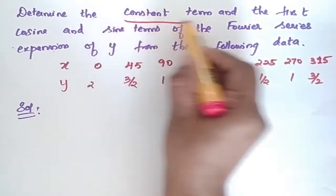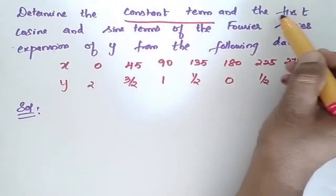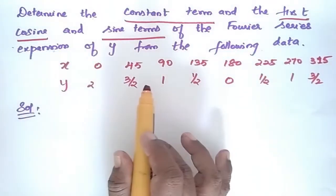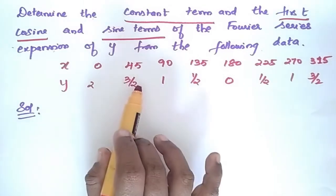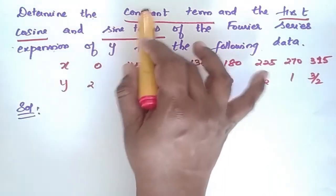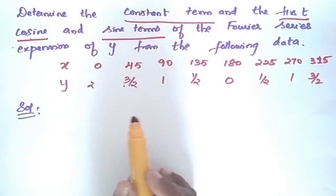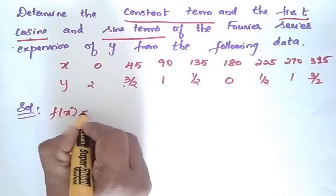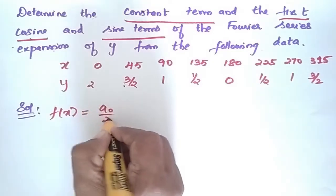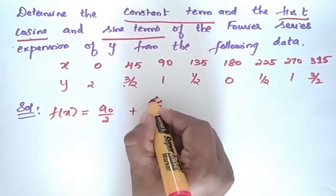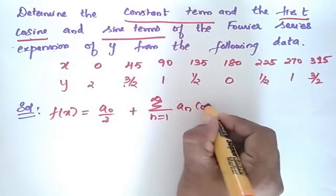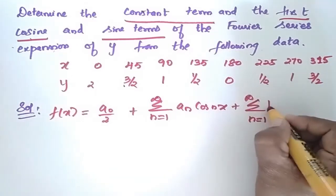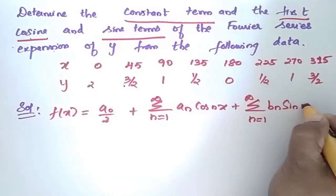Determine the constant term, first cosine, and sine terms of the Fourier expansion of y given in the following data. We have to find f(x) = a0/2 plus summation (n=1 to infinity) an·cos(nx) plus summation (n=1 to infinity) bn·sin(nx).